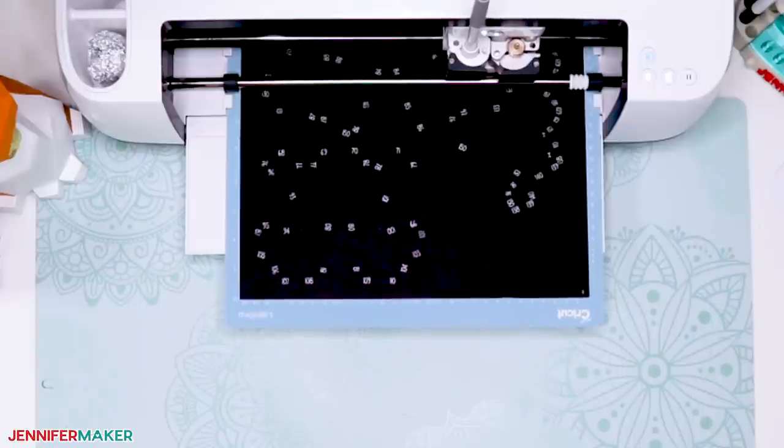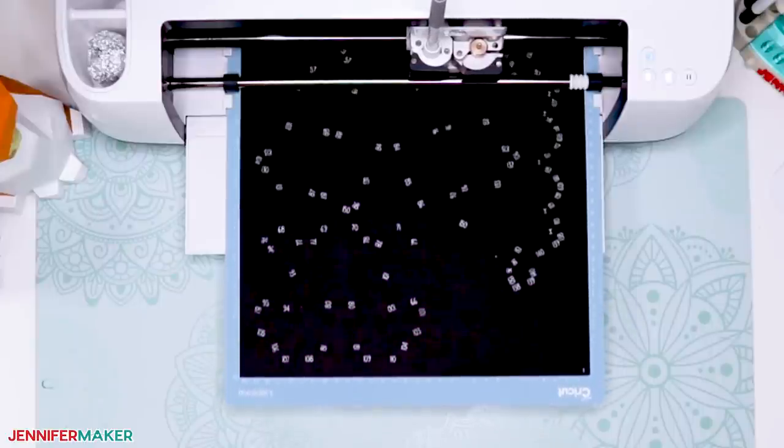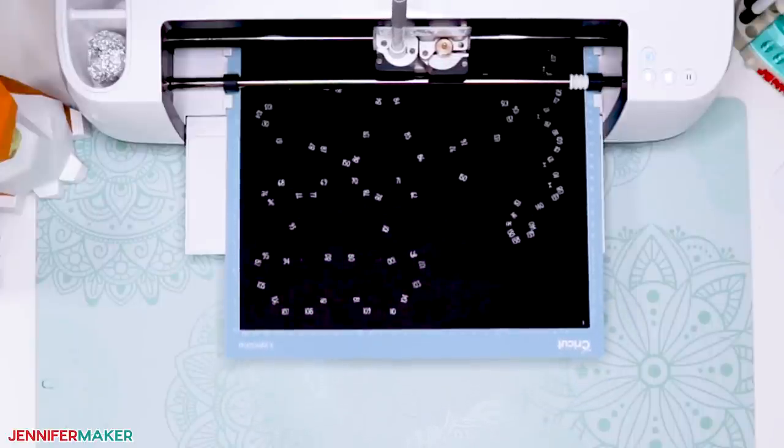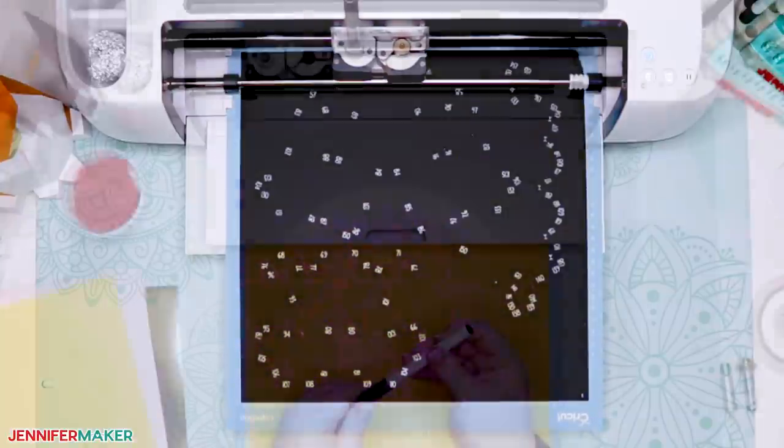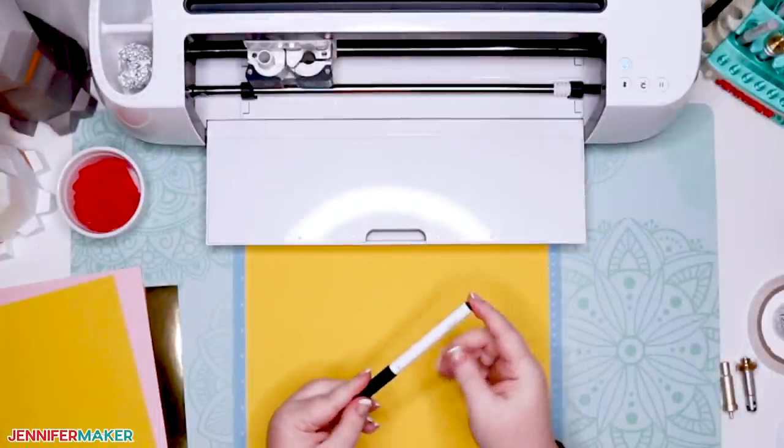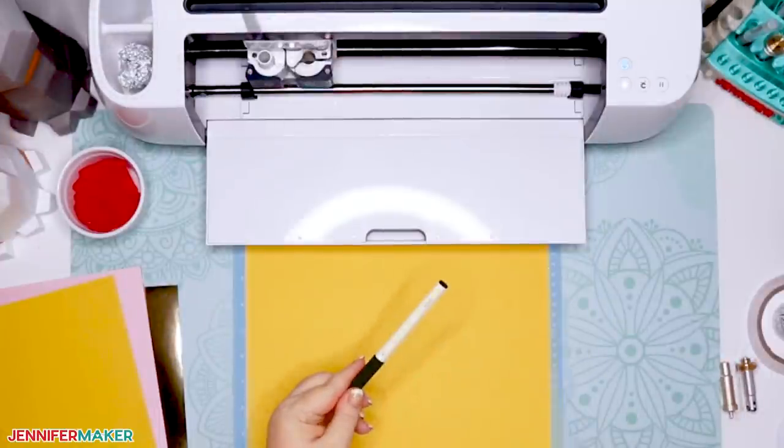If you're cutting black or really dark cardstock, I recommend you use something like a silver gel or metallic pen so you can actually see your draw lines on your paper. Otherwise, a black pen works just fine.